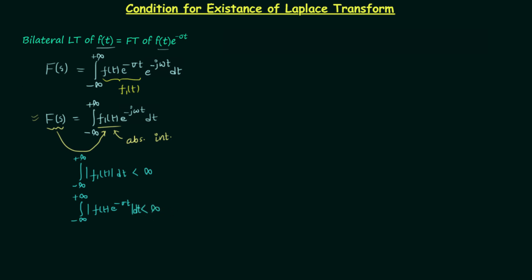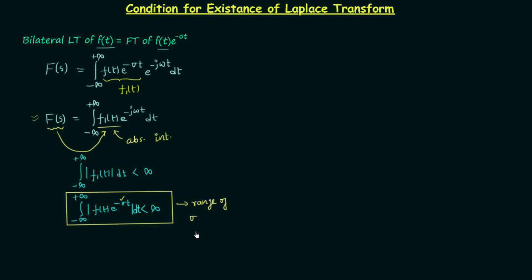This is the condition for the existence of the Laplace transform. From this condition we will get the range of σ, and using the range of σ we will get the region of convergence. The region of convergence is very important to mention along with the bilateral Laplace transform, because the Laplace transform only exists inside the ROC — outside it, the Laplace transform will be infinite. This will be more clear after solving one example, so let's move to the example.